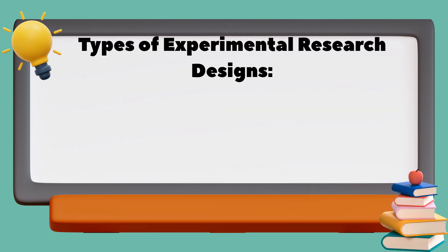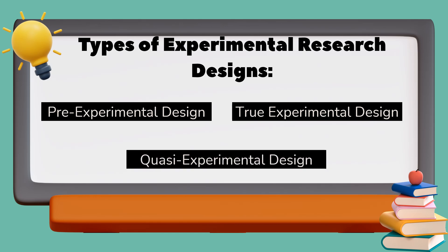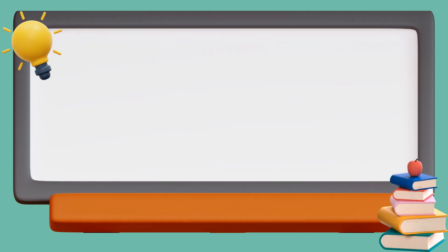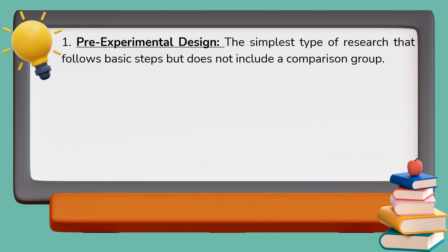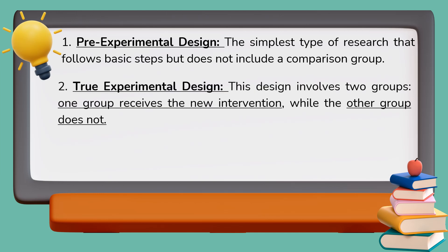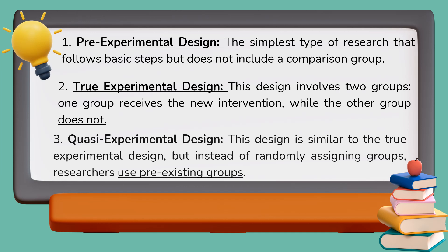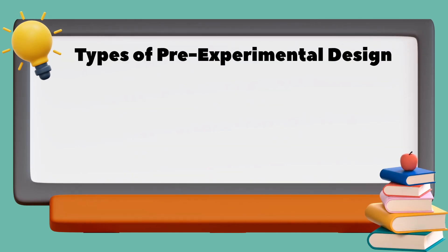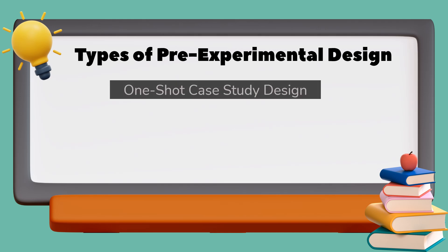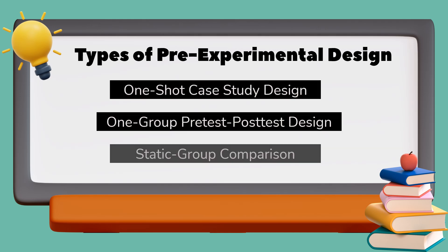The types of experimental research designs are pre-experimental design, true experimental design, and quasi-experimental design. Pre-experimental design is the simplest type — it follows basic steps but does not include a comparison group. True experimental design involves two groups: one receives the new intervention while the other does not. Quasi-experimental design is similar to the true experimental design, but instead of randomly assigning groups, researchers use pre-existing groups. There are three types of pre-experimental design: one-shot case study design, one-group pre-test post-test design, and static group comparison.